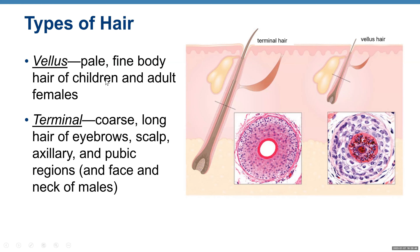Types of hair: vellus hair is pale, fine body hair of children and adult females. Terminal hair is coarse, long hair of the eyebrows, scalp, axillary and pubic regions, and the face and neck of males. The hair follicle is deeper in terminal hair, and the structure of hair also differs between vellus and terminal hair.